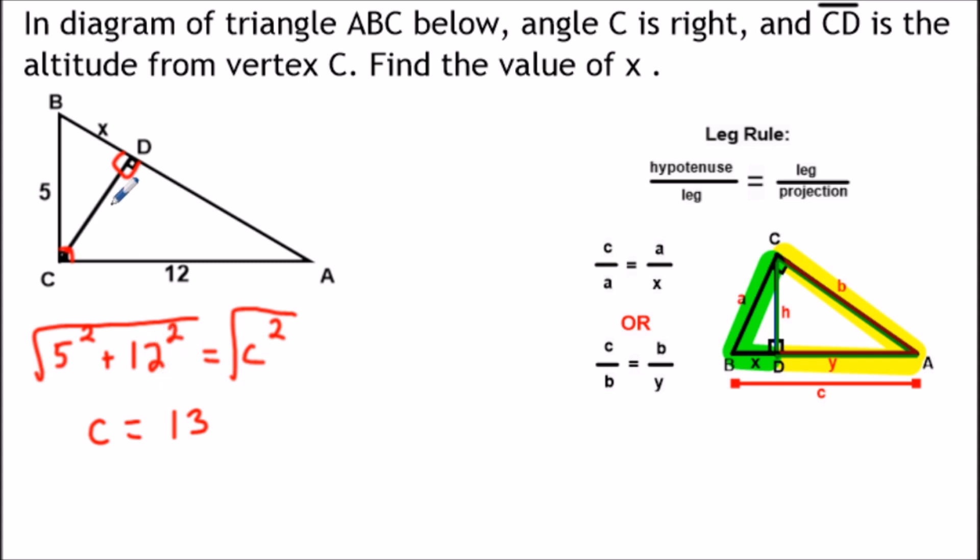So what we could do is we'll just label the hypotenuse; this entire segment here is 13 units long. So that's this quantity here in our leg rule.